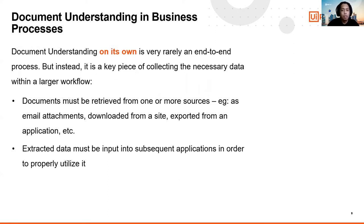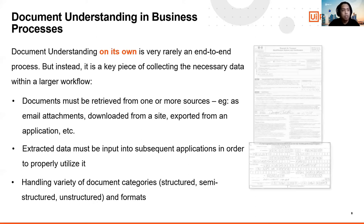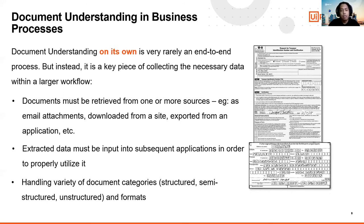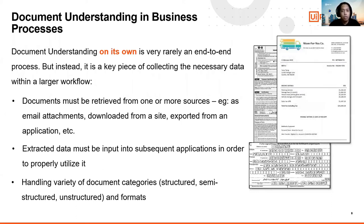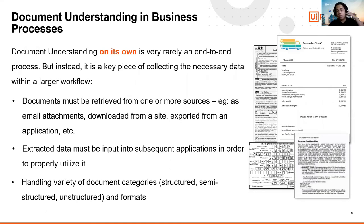A big challenge in document understanding is coming up with suitable approaches for a wide variety of document types. Depending on structure and format, documents fall into three categories. Structured documents — like tax forms or government forms — stay in a fixed format. Semi-structured documents — like receipts, invoices, bill of lading, or purchase orders — have varying layouts but similar types of information. Unstructured documents — like contracts, agreements, insurance policies, or declarations — have no standard structure.